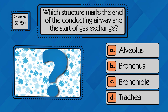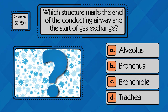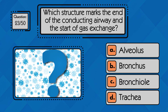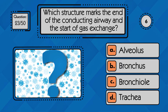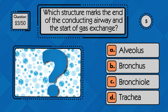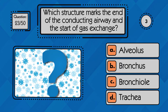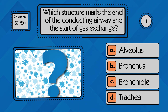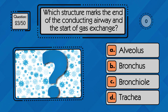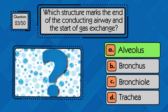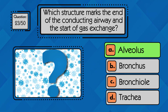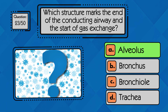Which structure marks the end of the conducting airway and the start of gas exchange? Gas exchange begins in the alveolus, where oxygen and carbon dioxide move between air and blood.